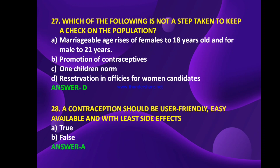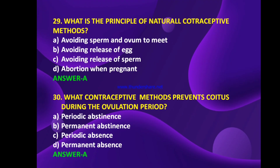A contraception should be user friendly, easily available, and with least side effects — true or false? The answer is true. What is the principle of natural contraceptive methods — avoiding sperm and ovum meeting, avoiding release of egg, avoiding release of sperm, or abortion when pregnant? The answer is A — avoiding sperm and ovum meeting is the principle of natural contraceptive methods.